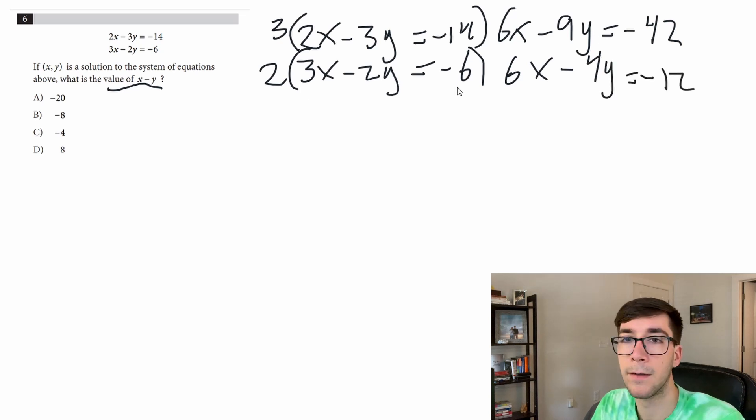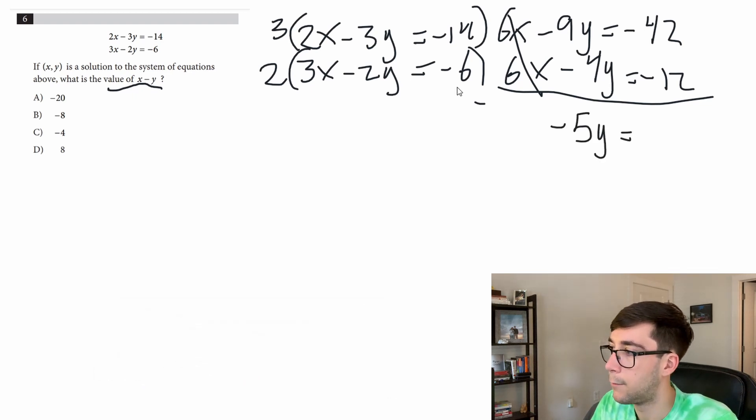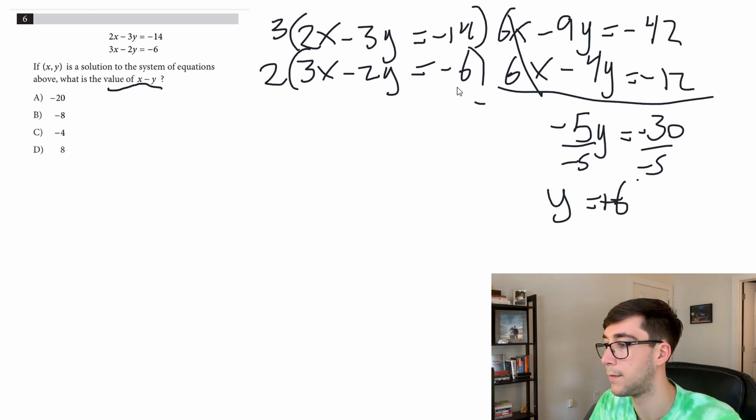So now we can eliminate those x's, so do minus. So gone, negative 9 minus a negative 4 is negative 9 plus 4 so that's going to be negative 5y. Negative 42 minus negative 12 is negative 42 plus 12 so that's negative 30. Divided by negative 5 we get y equals positive 6 because negatives cancel, so positive 6.